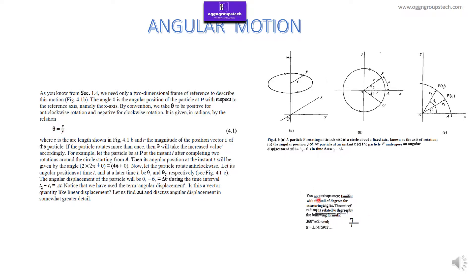You are probably more familiar with the unit of degrees for measuring angles. The unit of radians is related to degrees by the following formula: 360 degrees is equal to 2 pi radians. From this we get pi equals 3.141592... or approximately 3.14.